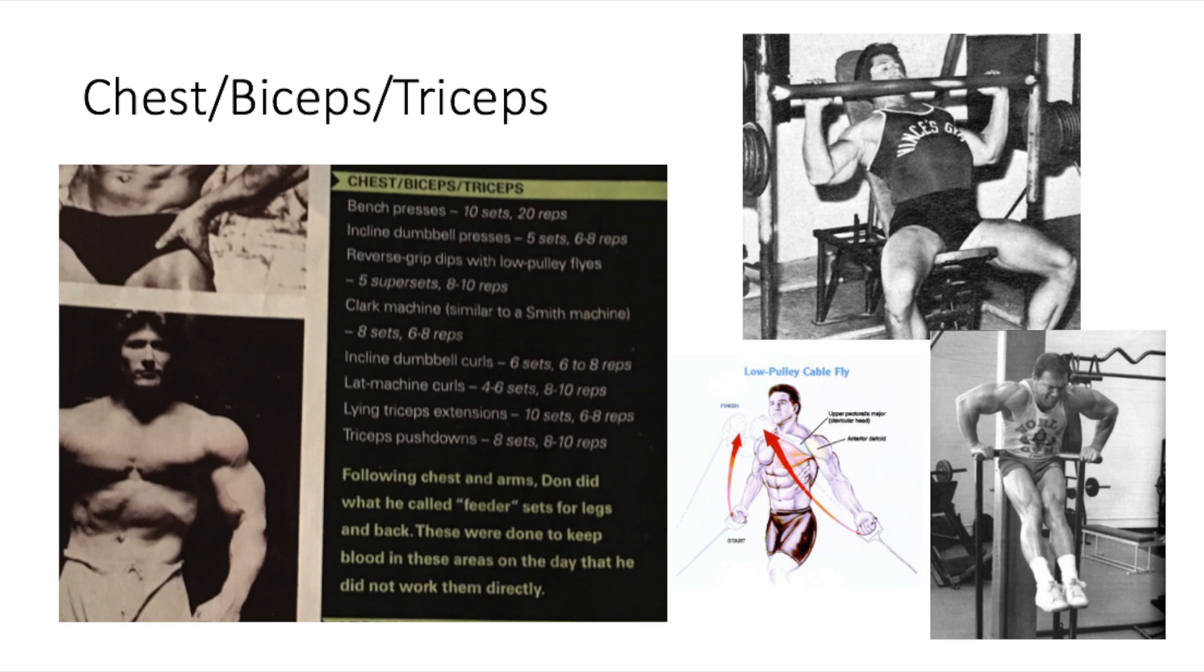After finishing that superset, he moves on to the Clark machine. If you take a look at the top picture right there, that is Don Howorth using the Clark machine. I don't know too much about the Clark machine, but he says it's very similar to the Smith machine and it looks like it's just got a thicker bar. After finishing eight sets of six to eight reps with the Clark machine, he moves on to the incline dumbbell curl, does six sets of six to eight reps.